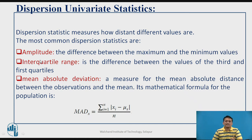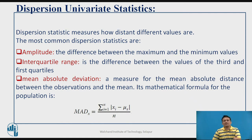Next comes interquartile range. In location univariate statistics, we calculate the first quartile value, second quartile value (which is the median), and third quartile value. Interquartile range is the difference between the third quartile value and the first quartile value. Since attribute values are arranged in ascending order, third quartile will always be larger than the first quartile, so the interquartile range will always be positive. It represents the width of the box plot.